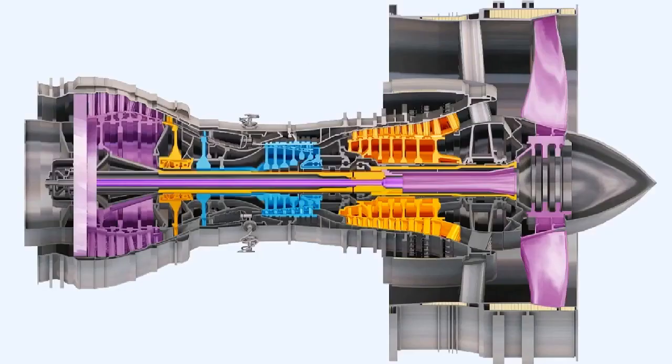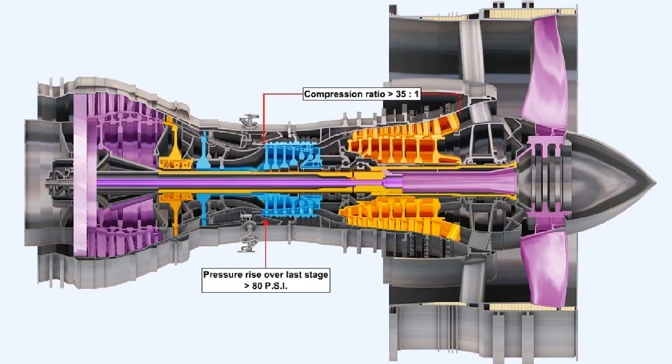In larger, more modern engines, compressors may consist of up to three spools. So effective is this method of compression that in an engine like the Rolls-Royce Trent, compression ratios in excess of 35 to 1 can be attained. In this engine, the pressure rise over the last stage may be greater than 80 pounds per square inch.